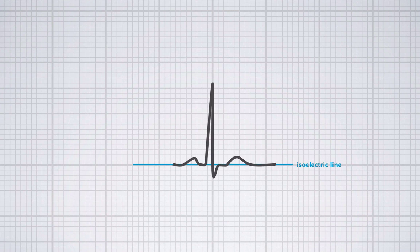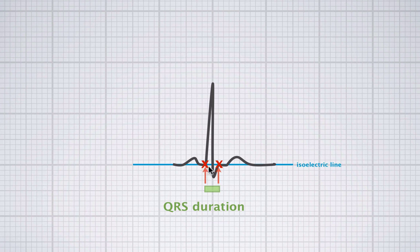Finally, let's talk about the duration of the QRS complex. Here you can see a normal QRS complex — it starts here and ends here. The duration of the QRS complex is about two and a half millimeters long. Two and a half times 0.04 is 0.1 seconds, and the normal duration of the QRS complex is 0.1 seconds or below. So we have a normal QRS duration in this case.